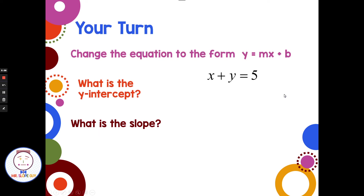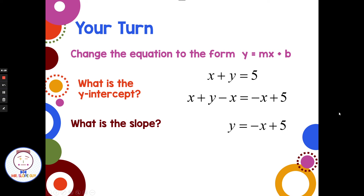Now it's your turn to try one on your own. Take x plus y equals 5, rearrange it in slope-intercept form, then identify the y-intercept and the slope. Pause the video here. Welcome back. On this one I can do it in one step — just subtract x from each side. The x's cancel on the left and I have y equals negative x plus 5. The y-intercept is positive 5, and the slope is negative 1. Then I can take those key characteristics and graph that line.